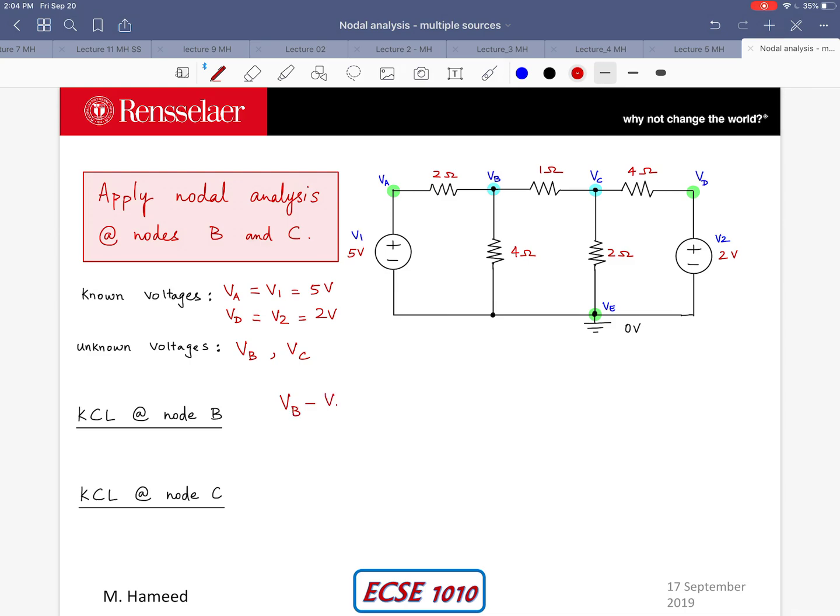So let me write that as V1 divided by 2 ohms plus VB divided by 4 ohms plus VB minus VC divided by 1 ohm equals 0.